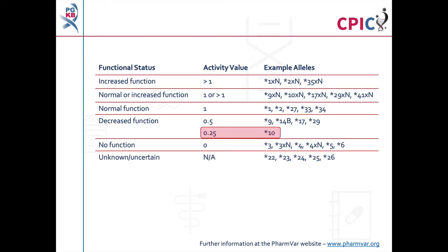As a result of the CPIC CYP2D6 genotype to phenotype standardization project, the CYP2D6 star 10 allele was assigned an activity value of 0.25, reflecting its significantly reduced function compared to other decreased function alleles. As this guideline was published before completion of the standardization project, the star 10 allele is still given an activity value of 0.5 in the original manuscript. However, the guideline has been fully updated in the CPIC database to account for the new activity value of star 10, and this update has not altered the guideline recommendations.